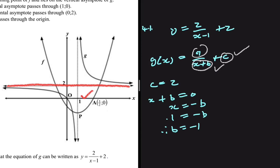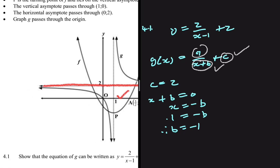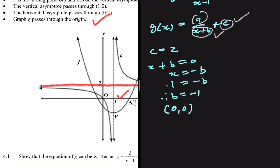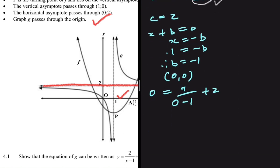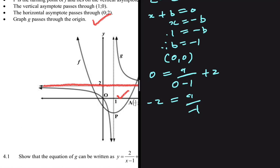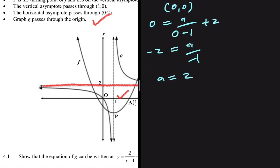We just need to find a. In our question statement, we are told that the graph g passes through the origin, so we have the point with coordinates 0 and 0. Substituting: y equals 0, x equals 0, b equals minus 1, and c equals 2. Taking 2 to the other side gives minus 2 equals a divided by minus 1. Since minus times minus is positive, a equals 2. So our function g of x is indeed equals to 2 divided by x minus 1, plus 2.